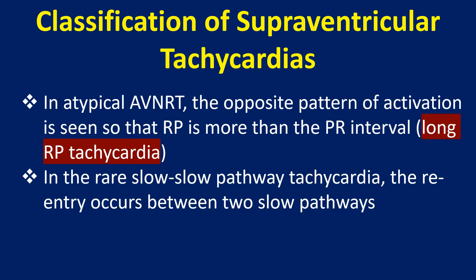In atypical AVNRT, the opposite pattern of activation is seen, so that RP is more than the PR interval — a long RP tachycardia. In the rare slow-slow pathway tachycardia, the reentry occurs between two slow pathways.